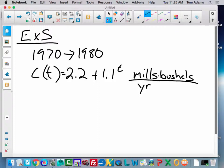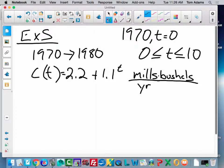And so t=0, so according to the book, in 1970, t equals 0. So we're really saying from 0 to what? 10, okay? And then it says,